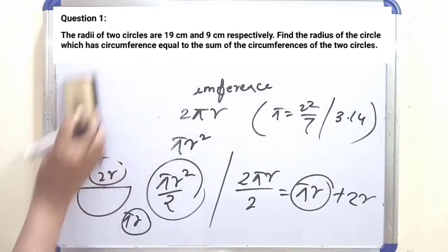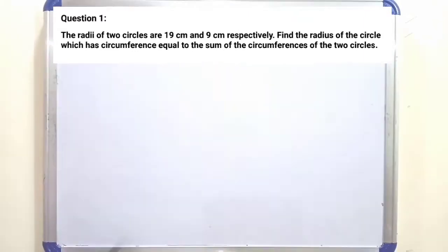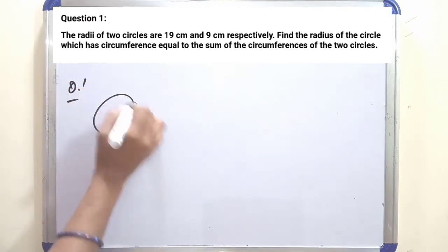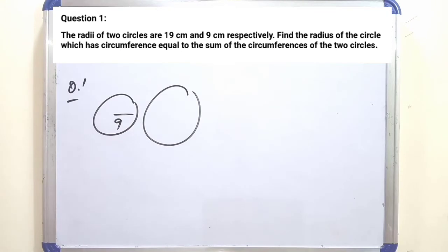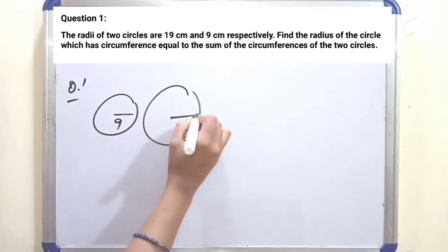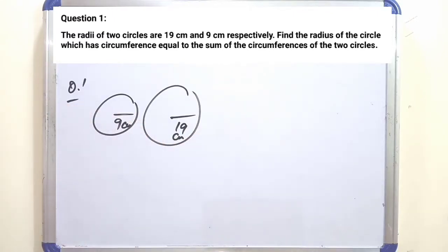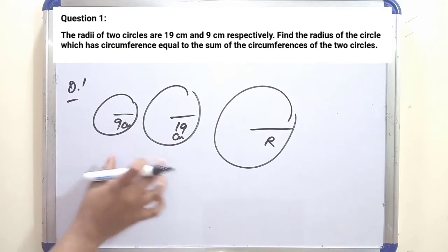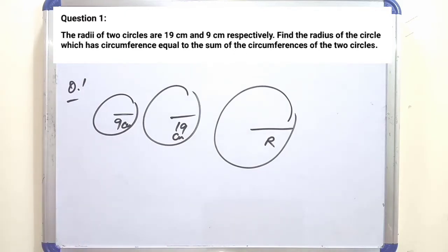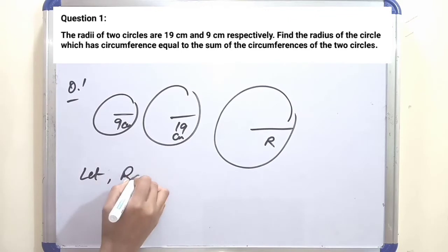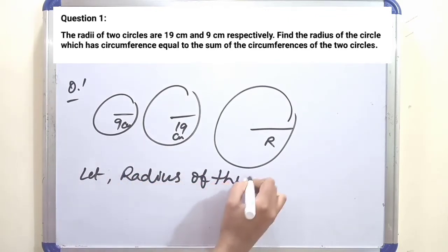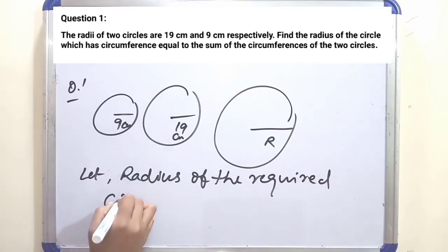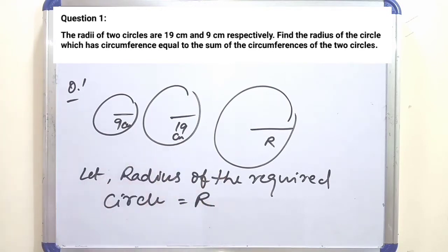Given: one circle has radius 9 cm and another has radius 19 cm. We need to find the radius of a new circle whose circumference equals the sum of the circumferences of these two circles. Let the radius of the required circle be r centimeters.